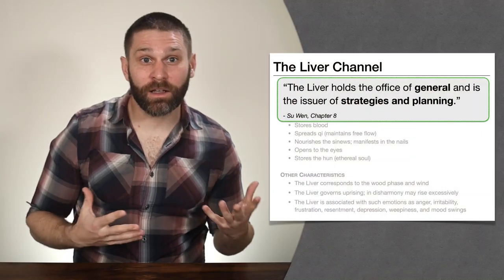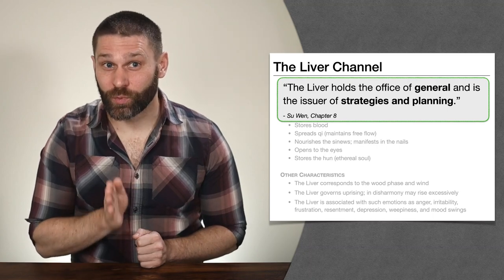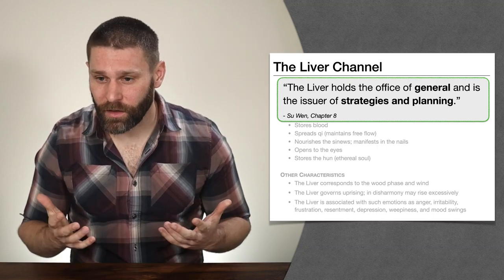Remember that the liver belongs to the wood phase, and when we say wood, we actually mean a tree. When a tree is healthy, it's supposed to be green and flexible and bends very easily in the wind, but does not break. When our tree is unhealthy, instead of bending, it just snaps. So we want to think about: do they have flexibility in their planning and strategizing, or are they just rigid? And if things don't go to plan, they fall apart.